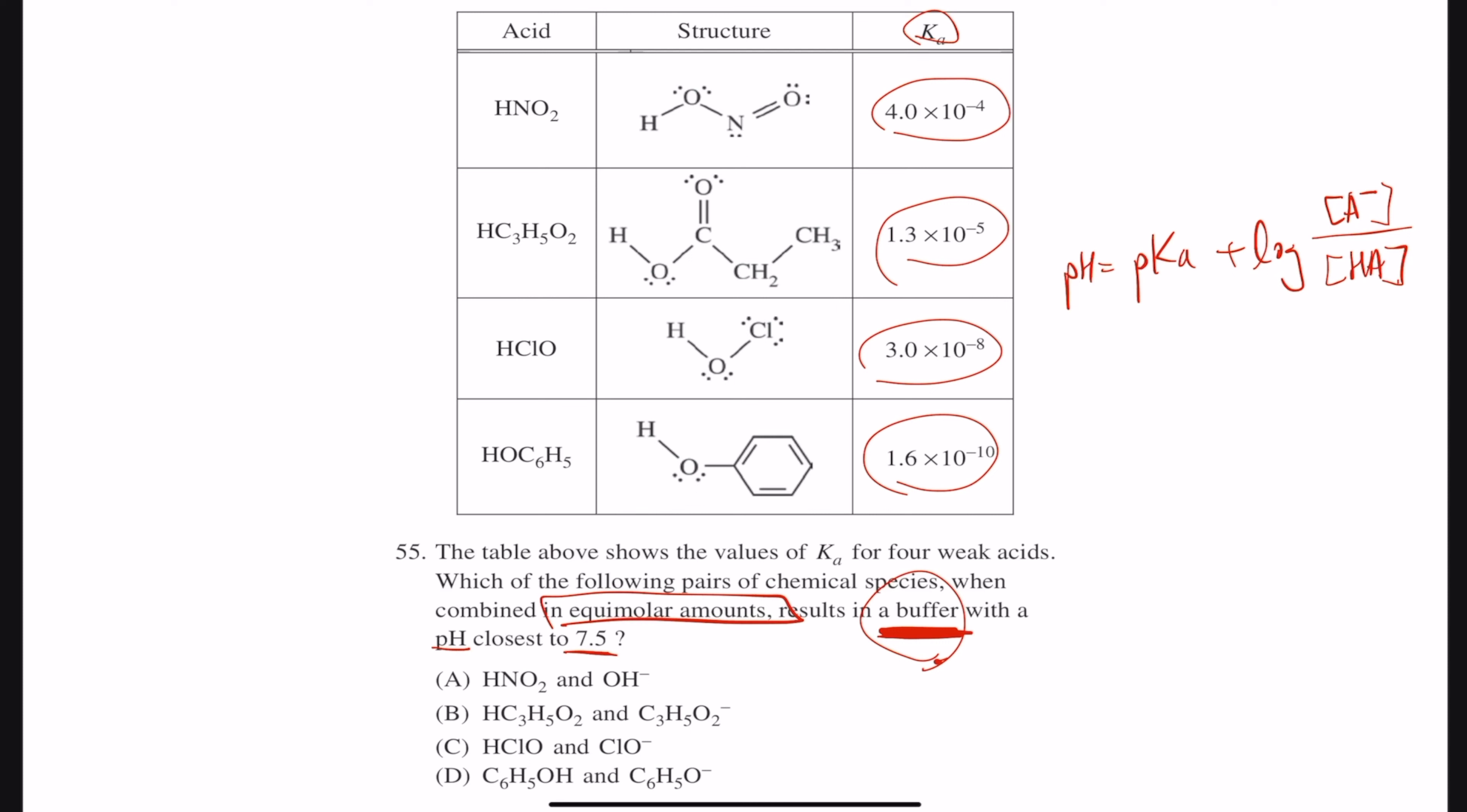And we have equimolar, a.k.a. your acid and the conjugate base is the same amount. So if you just put, like a 10 and a 10, the point is they're the same number, so they would cancel to 1.